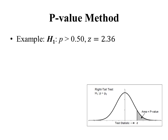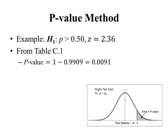Going back to our example, the alternative hypothesis was p is greater than one half, so this is a right-tailed test. The p-value is the area underneath the bell curve to the right of the test statistic. Our test statistic was 2.36. Going to table C1, our z-score table, and looking up z equals 2.36, we find the area to the left is 0.9909 — that's the unshaded region. Subtracting from one gives us 0.0091, which is our p-value.